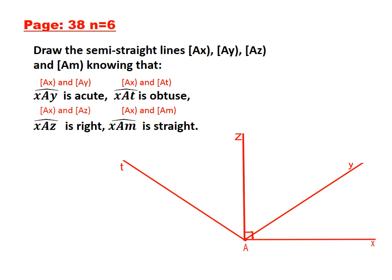AM must be opposite to AX. So here is the second semi-line AM, opposite to AX, since XAM is the straight angle. It is 180 degrees, equals to 180 degrees.